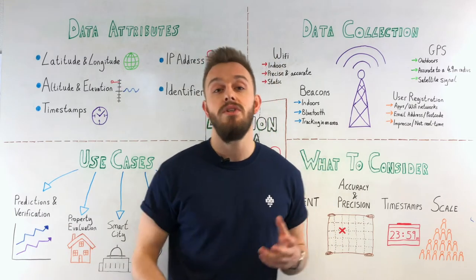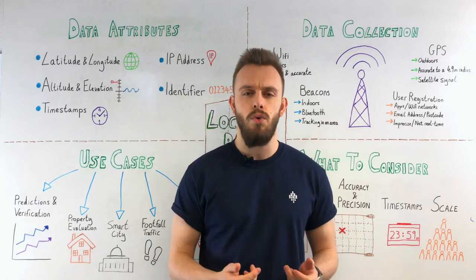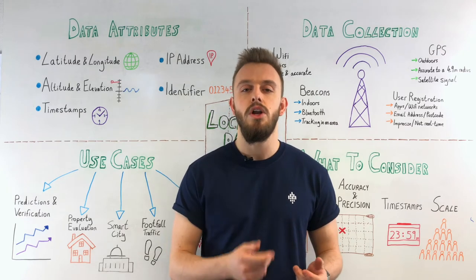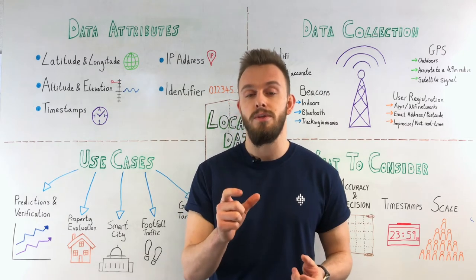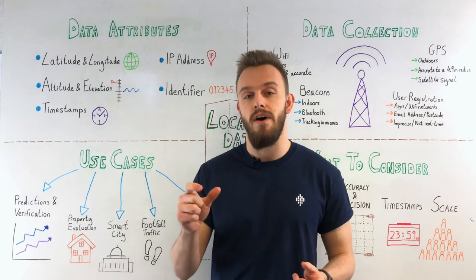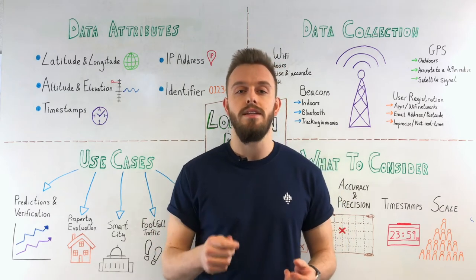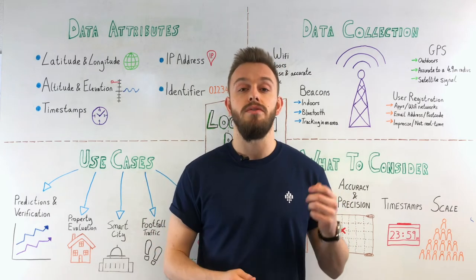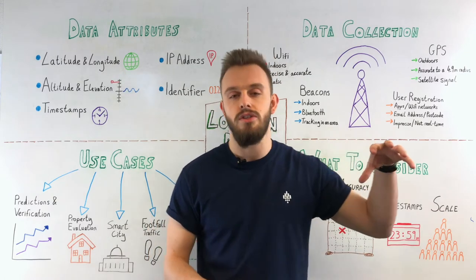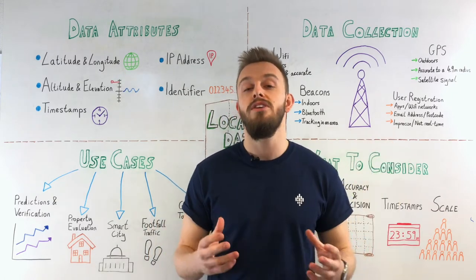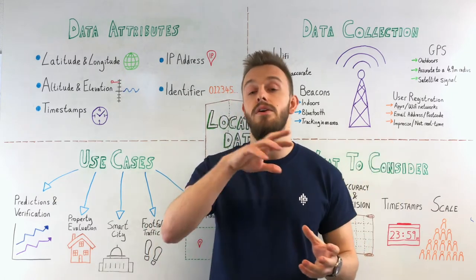So what exactly is location data? To give you a quick definition, location data is information about the geographical position of devices or objects. Now, unlike its cousin, point of interest data, which is all about static structures, location data tends to be about things that can move.